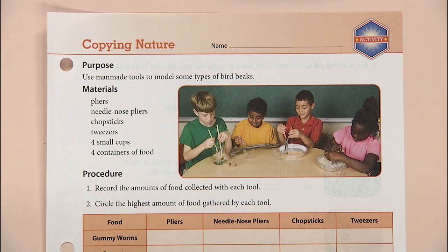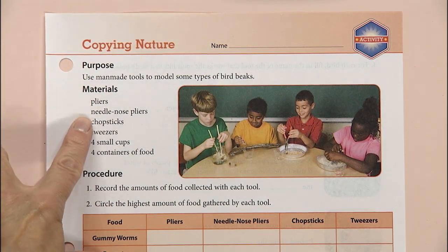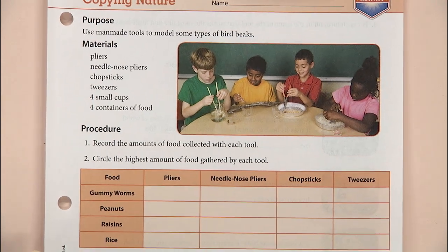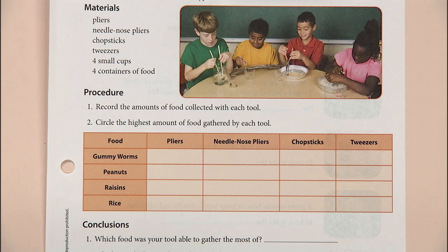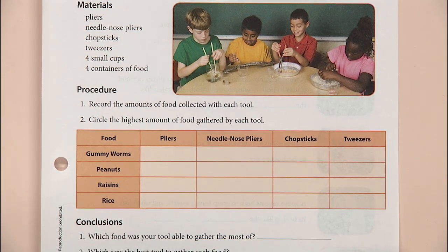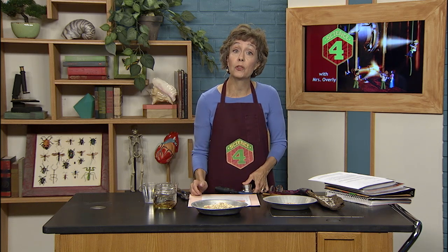Look at your activity manual page. We've got our purpose here, and we have listed the materials and the procedure — that's what you're going to do. This is where you're going to communicate what you find. You are going to write down the amount of food that you are able to move with each tool. Why is the information recorded on a chart? It's a good, organized way to keep the data together, making it easier for someone else to find out what you learned and to add to it.